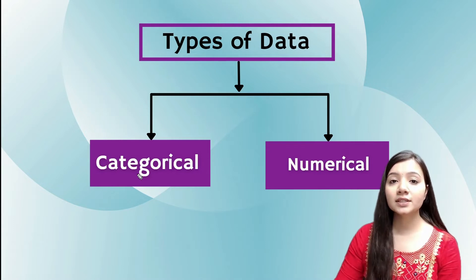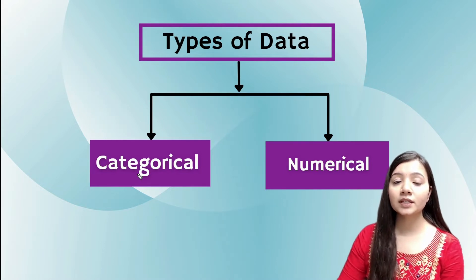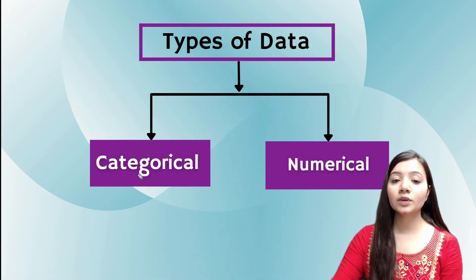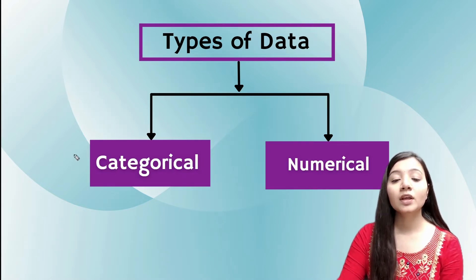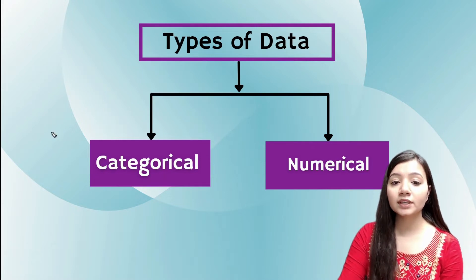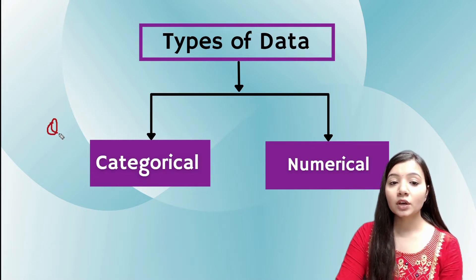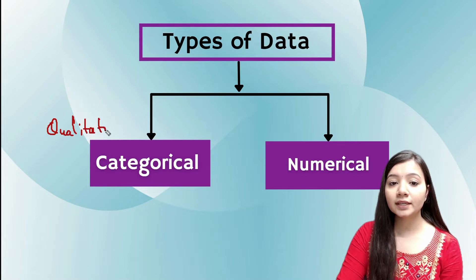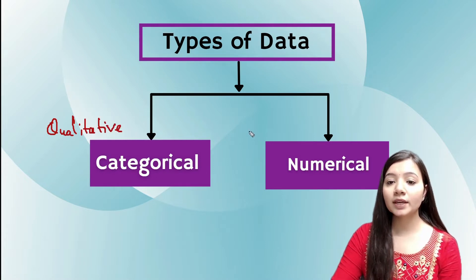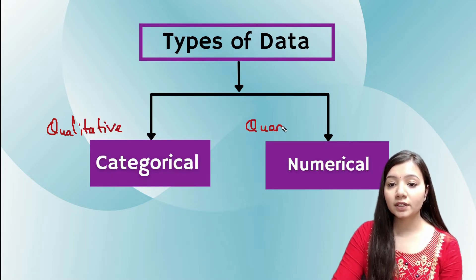So let's understand types of data. Data is divided into categorical data and numerical data. We can also say categorical data as qualitative data, and numerical data as quantitative data.